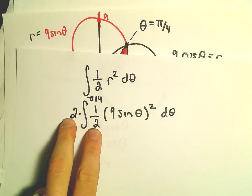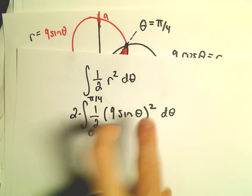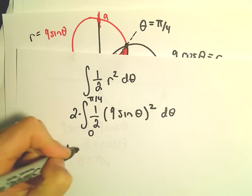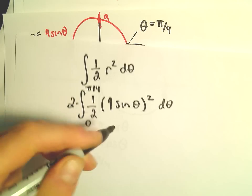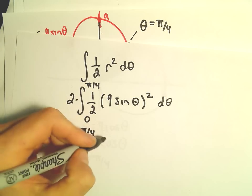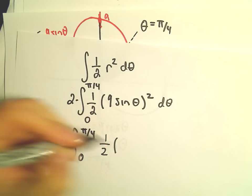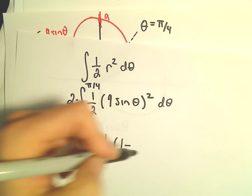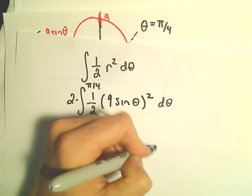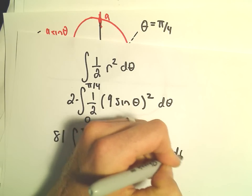So this is now the integral we'll have to compute. 2 times 1 half, that's just 1. We would get 9 squared, which is going to be 81. We would have from 0 to pi over 4. Then we would be left with sine squared theta. But then we'll have to use our identity, 1 half times 1 minus cosine of 2 theta d theta.